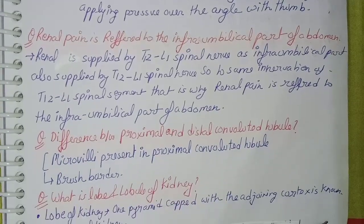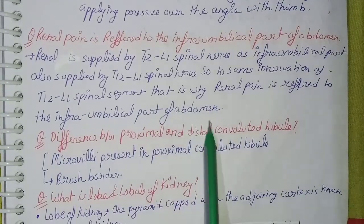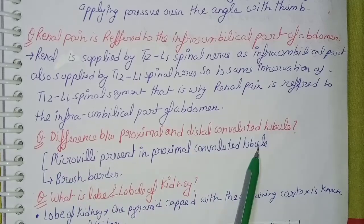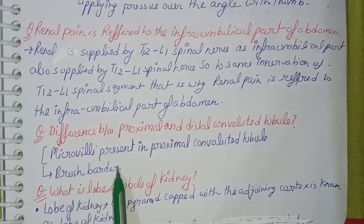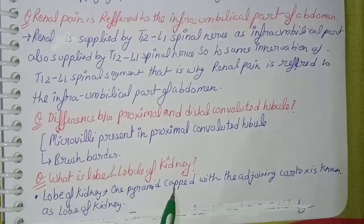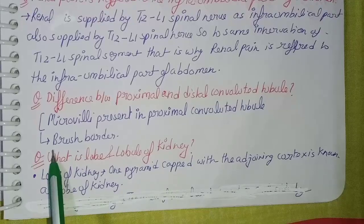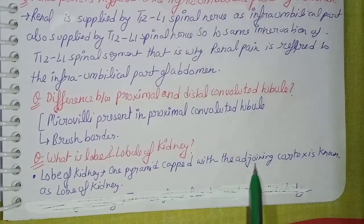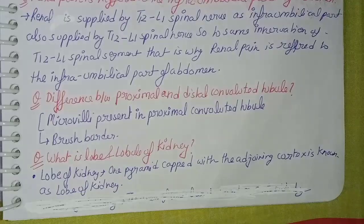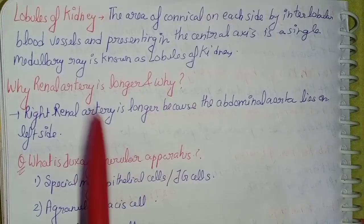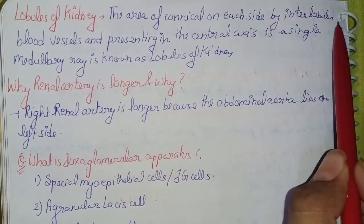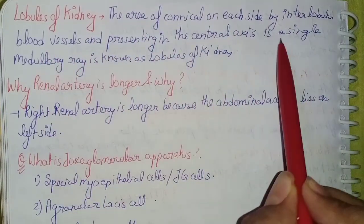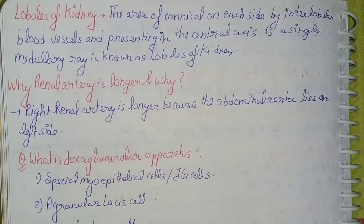Difference between proximal and distal convoluted tubule: microvilli are present in the proximal convoluted tubule, which is also called the brush border epithelium. Lobes and lobules of the kidney: a lobe of the kidney is one pyramid capped with the adjoining cortex. A lobule of the kidney is the area of cortex on each side of the interlobular arteries, presenting in the central axis a single medullary ray.